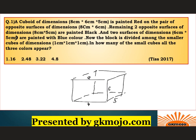Red is painted on the pair of opposite surfaces of dimensions 8 cm × 6 cm — so the front face and the back face are painted red. The two surfaces of dimensions 8 cm × 5 cm are painted black — that's this upper and lower face. And the remaining 6 cm × 5 cm surfaces are painted blue on both sides.